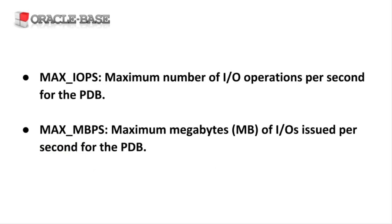From Oracle 12.2 onward the following parameters can be set at the root container and pluggable database level. We can set one or both depending on the requirements. Max IOPS represents the maximum number of IO operations per second for the PDB, regardless of how big those IO operations are.